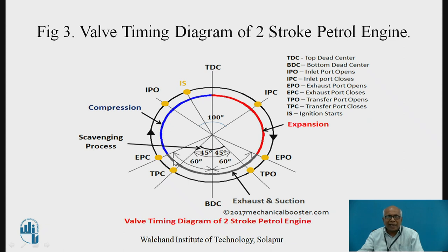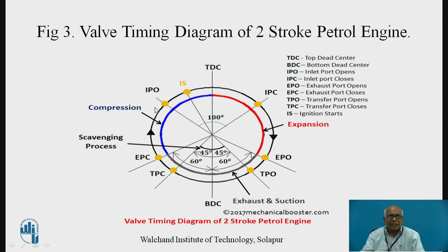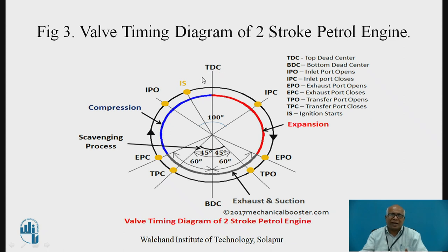After both ports are closed, the charge admitted inside the cylinder from the transfer port is compressed, and compression continues. The inlet port opens for the crankcase — inlet inside the crankcase — and this is the inlet position. This is the valve timing or port timing diagram for the two-stroke petrol engine. In the two-stroke petrol engine, the spark is ignited before top dead center.